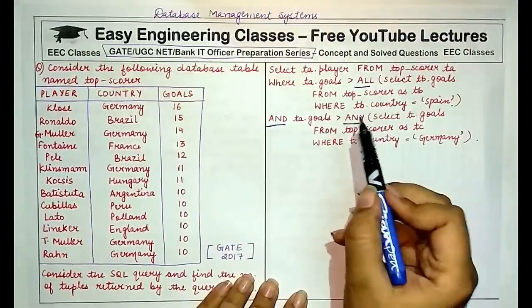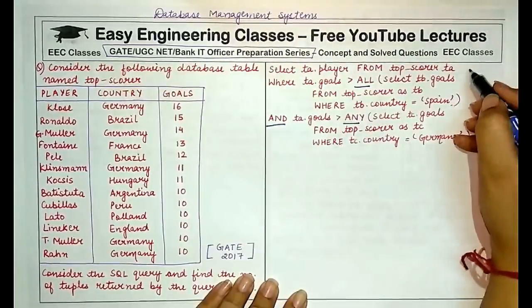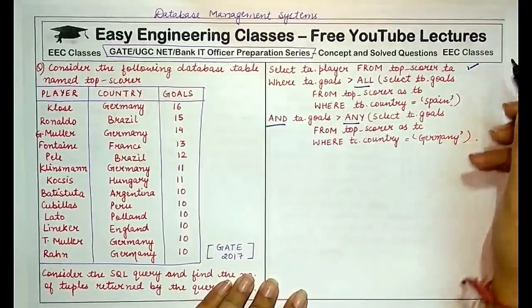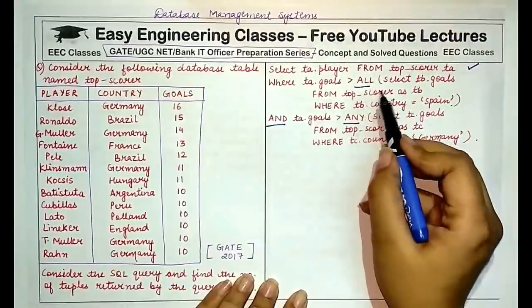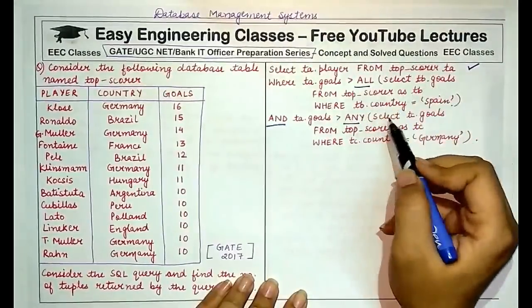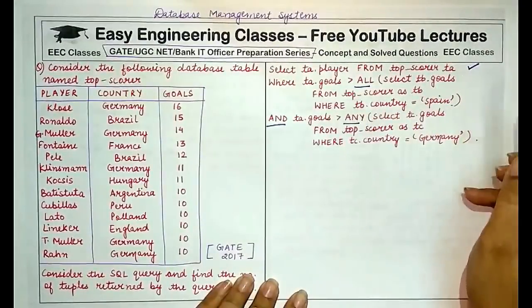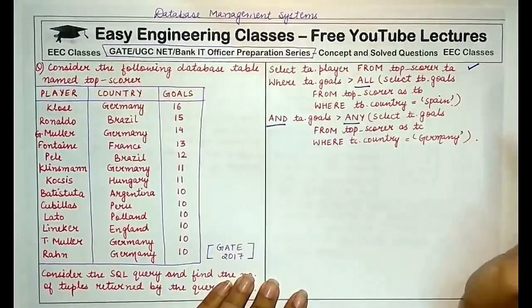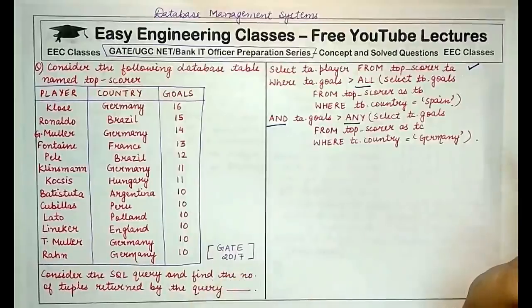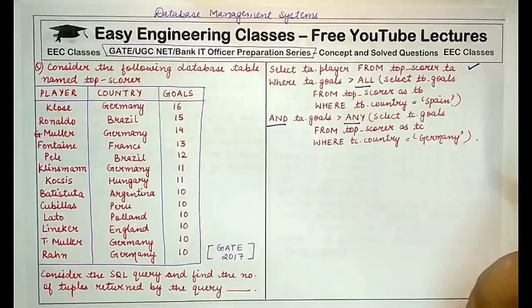Basically it has an outer query, an inner query, and an innermost query. We will always start by solving the innermost query and move outwards.